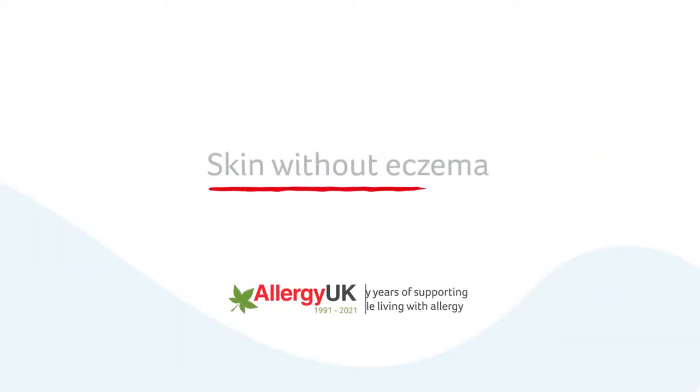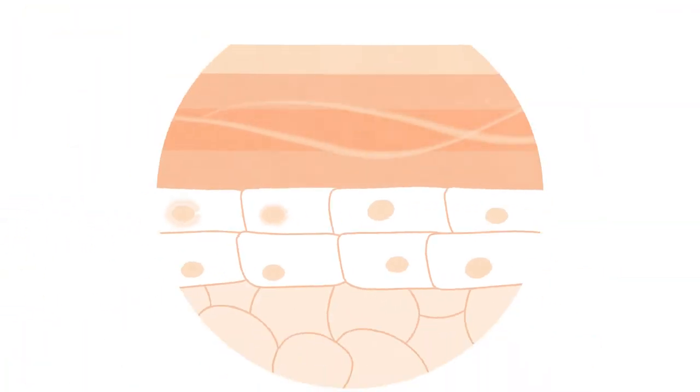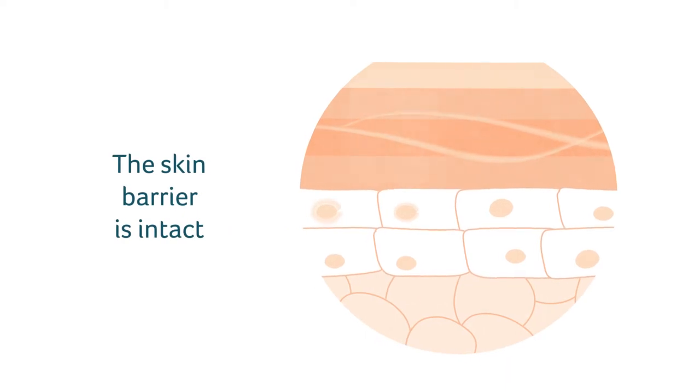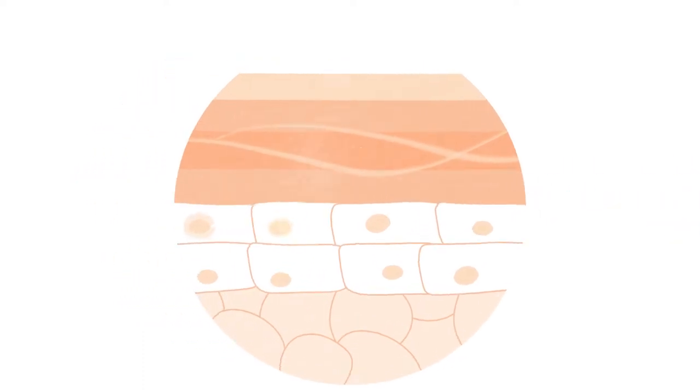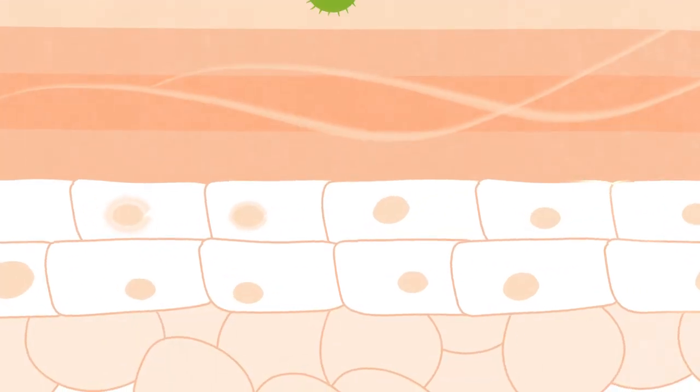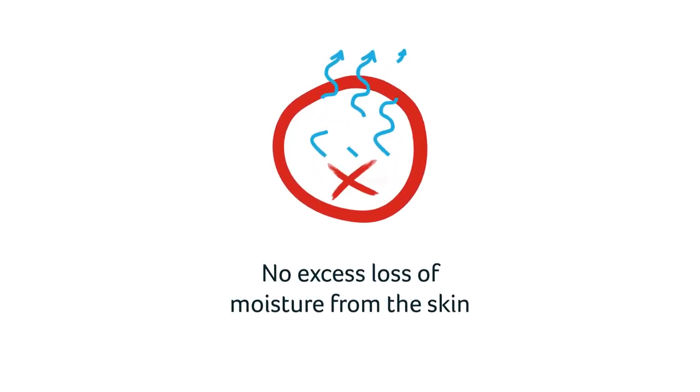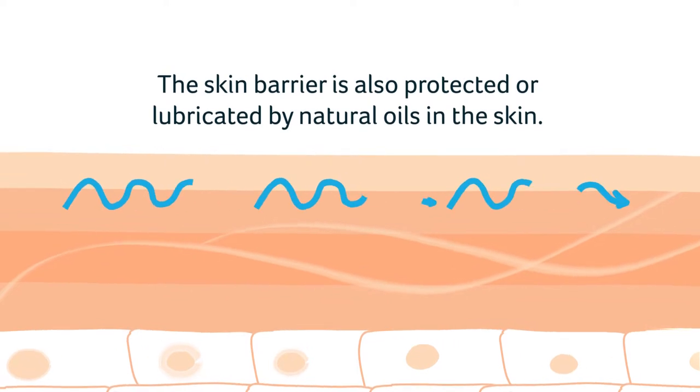Skin without eczema: In skin where there is no eczema or dry skin, the surface of the skin, also called the skin barrier, is intact. This means that there are no breaks in the skin. This acts as a barrier to prevent bacteria, allergens, or irritants getting through the skin layer. The cells of the skin bind together like a well-cemented brick wall with no gaps, and there is no excess loss of moisture from the skin. The skin barrier is also protected or lubricated by natural oils in the skin.